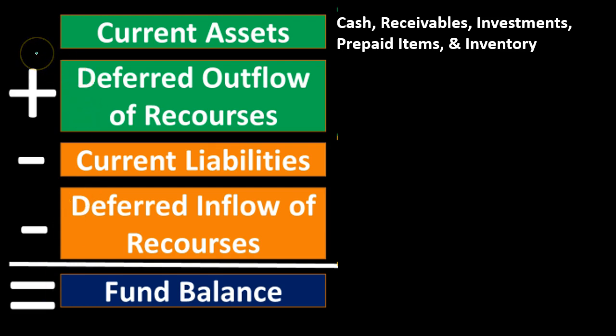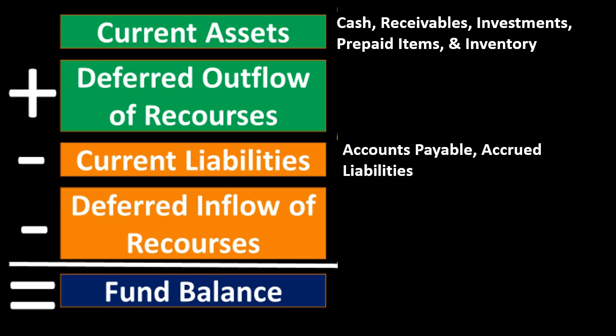Current assets on a fund balance sheet under the modified accrual basis consist of cash, receivables, investments, prepaid items, and inventories. Deferred outflows represent a consumption of net assets by the government applicable to a future reporting period. Current liabilities — not current and long-term — consist of what we'd expect: accounts payable and accrued liabilities. We don't have long-term notes payable or long-term bonds payable here because fund accounting focuses on short-term flows.